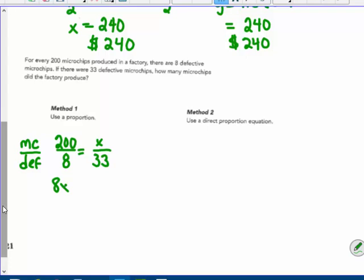So product of the means. Eight x has to equal the product of the extremes. Thirty three times two is sixty six. Bring along those two zeros. And dividing by eight on both sides.